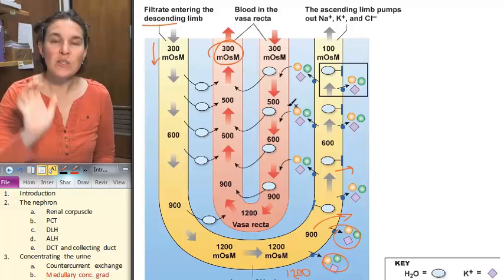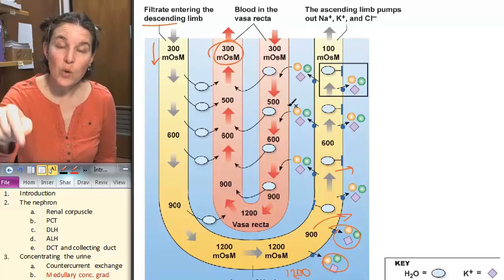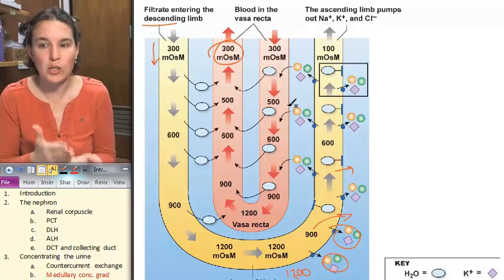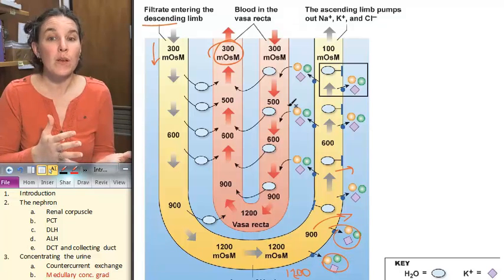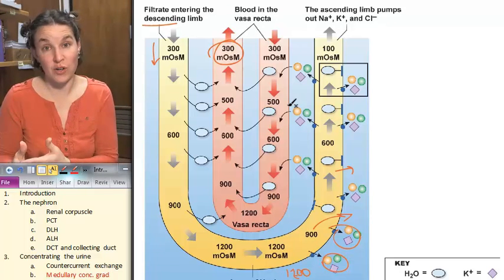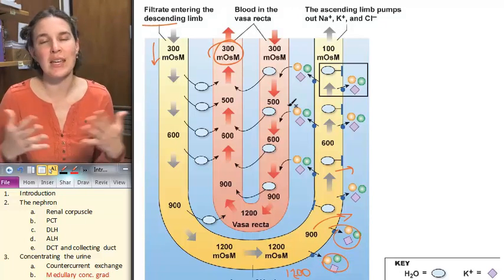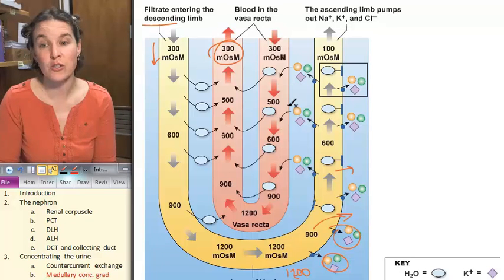This was a doozy of a lecture. In the next one, we're going to look at the hormones. We're going to look at the different hormones that affect the concentration of your urine and how that happens, and again, we're going to rely on this medullary concentration gradient.